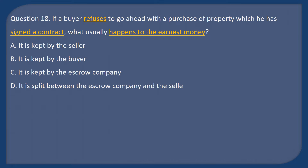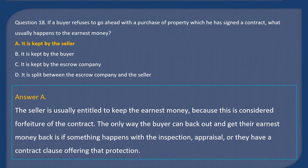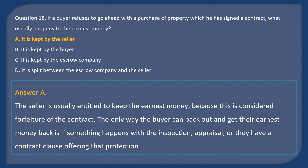Question 18: If a buyer refuses to go ahead with a purchase of property which he has signed a contract for, what usually happens to the earnest money? A. It is kept by the seller. B. It is kept by the buyer. C. It is kept by the escrow company. D. It is split between the escrow company and the seller. Answer: A. The seller is usually entitled to keep the earnest money, as this is considered forfeiture of the contract. The only way the buyer can back out and get their earnest money back is if something happens with the inspection, appraisal, or they have a contract clause offering that protection.